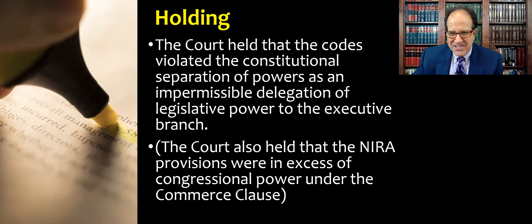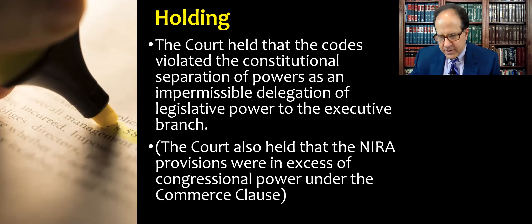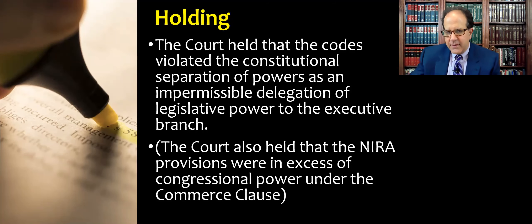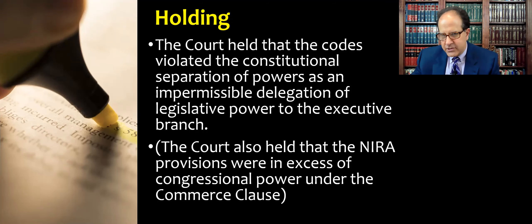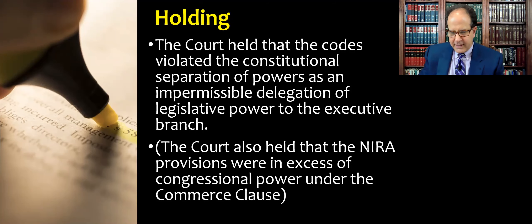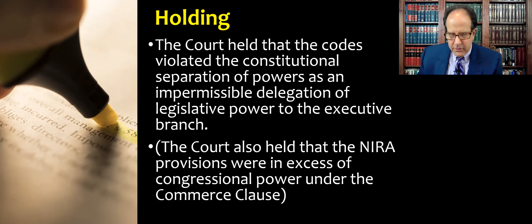Here is our holding in the case. The court held that the codes violated the constitutional separation of powers as an impermissible delegation of legislative power to the executive branch. In other words, the concern is that Congress gave the president the power to make laws, and the Constitution vests that power exclusively in Congress. Therefore, Congress isn't allowed to just ask the president to do its job in its place. Note that the court also held that the National Industrial Recovery Act provisions were in excess of congressional power under the Commerce Clause, so you may have read this case in your constitutional law course as one of our Commerce Clause cases.